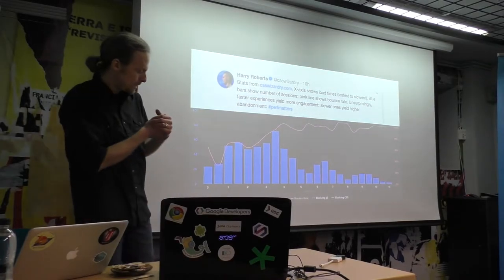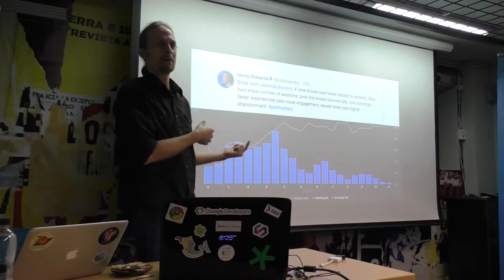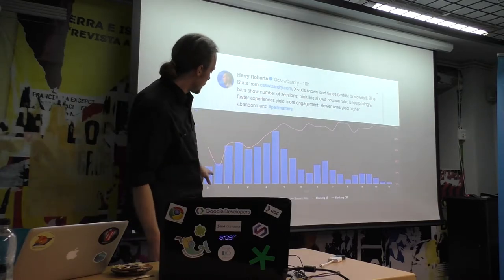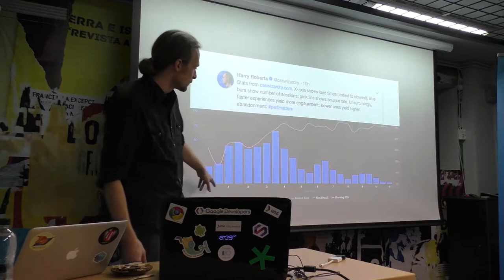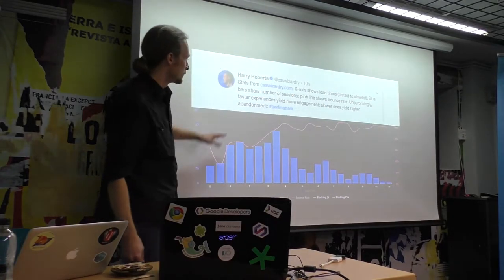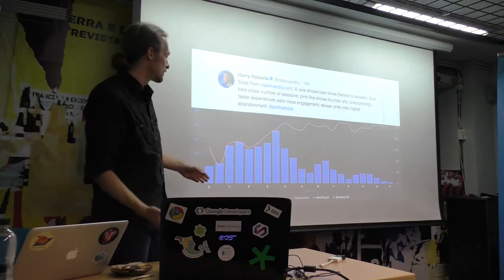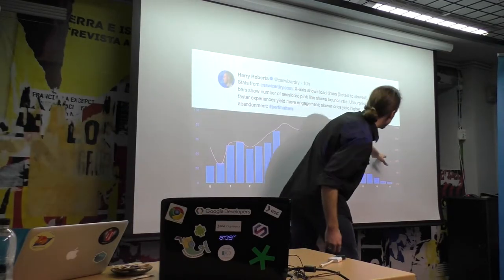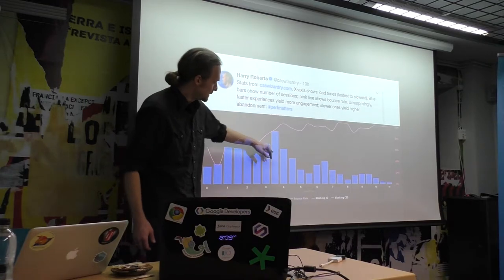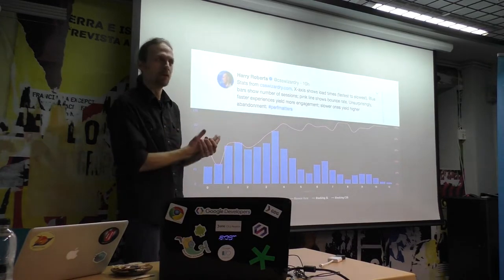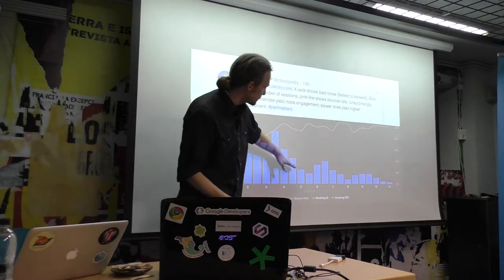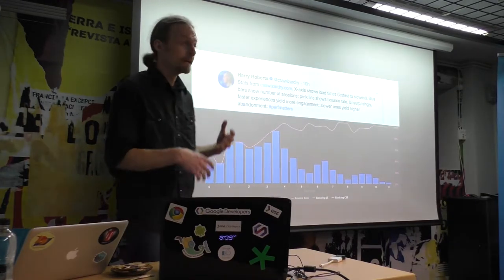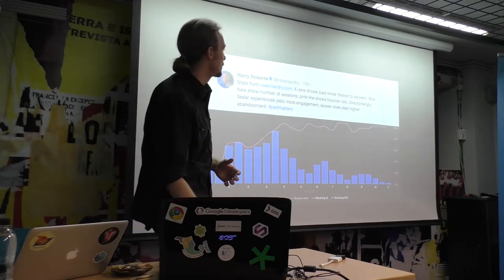A tweet came up while I was building the deck — I should have been working on my deck, but I was reading Twitter. What he's graphing here is the number of people at different load times: 0 seconds, 7 seconds, 10 seconds, and the percentage of people who bounced. 50% bounce is right about at the three-second range, which aligns with what Google was saying. You can also see there are probably a couple different modal distributions — maybe one for desktop and one for mobile. Just another piece of data.